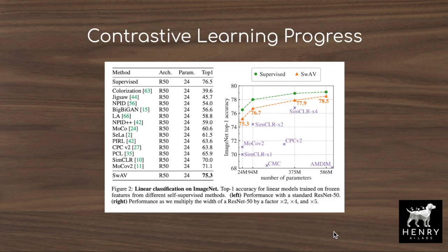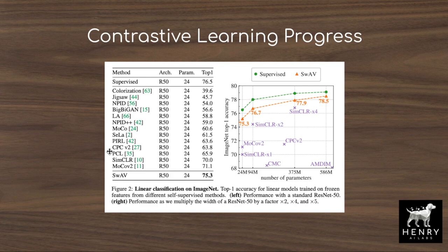This table illustrates the progress of contrastive self-supervised learning catching up to full supervised learning, constrained to the ResNet-50 architecture. This new contrastive clustering algorithm from Facebook AI is within one percentage point of full supervised learning on the ImageNet classification task. You can see the progression: momentum contrastive learning, SimCLR, prototypical contrastive learning from Salesforce, and other algorithms. BigGAN as a generative self-supervised approach performs about 20% lower than this contrastive clustering algorithm.